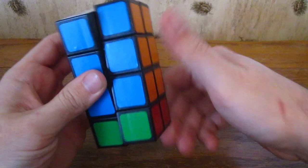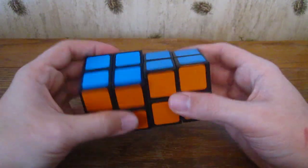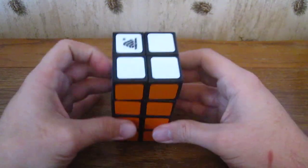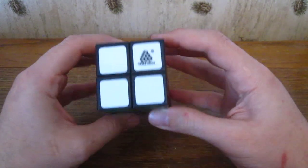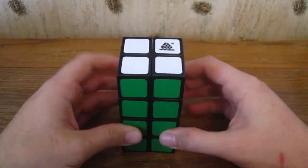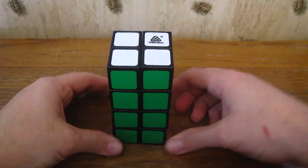That's how you solve the 2 by 2 by 4. Hopefully you found this helpful if you're having trouble with it. Yeah, a fun puzzle, and I look forward to continuing to fill my 2 by 2 by n cuboid collection. Thanks for watching, I'll catch you all later. Bye!